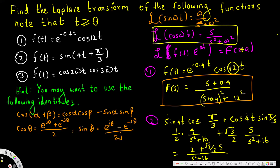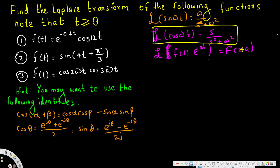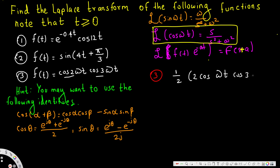Now let's look at the third one: f(t) = cos(2ωt) · cos(3ωt). If you have a cosine multiplication, the expansion uses the product-to-sum identity and becomes: (1/2)[cos(2ωt − 3ωt) + cos(2ωt + 3ωt)] = (1/2)[cos(ωt) + cos(5ωt)].